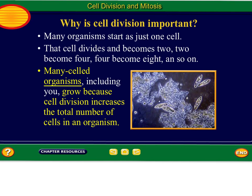Let me look at my answer key. Typically the first blank should be 'cell division.' It says cell division increases the number of cells and causes many-celled blank to grow — that blank is 'organisms.' So put 'organisms' in that blank. Can I please have you highlight 'cell division'? Highlight cell division.